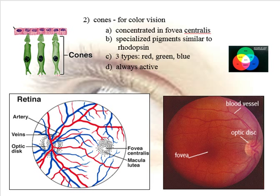These cones are always active. So unlike the rods, they are always active. If you go out at night, dark adapted, and you turn a flashlight on and shine it on a green tree, you see a green tree right away. You don't have to wait for the cones to become active.